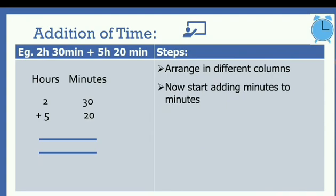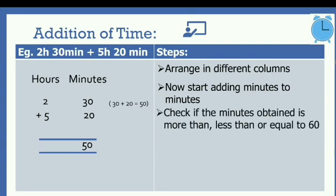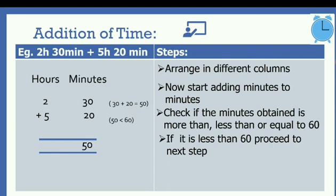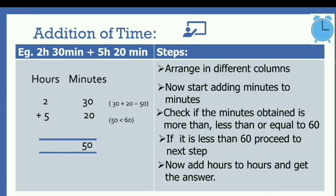Now start adding minutes to minutes. So 30 plus 20 gives us 50. After adding, we got 50 minutes. Now check if the minutes obtained is more than, less than, or equal to 60. In this case, the answer is less than 60. So if it is less than 60, we proceed to the next step — add hours to hours. We have 2 and 5, so 5 plus 2 gives us 7. Our answer is 7 hours 50 minutes.